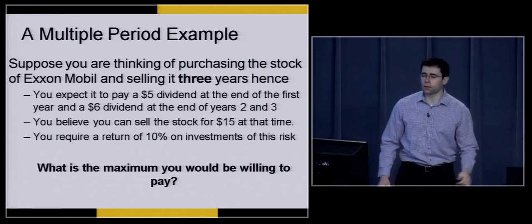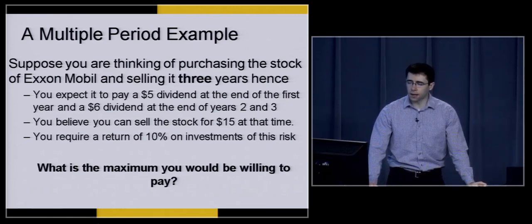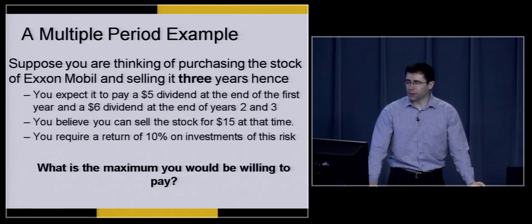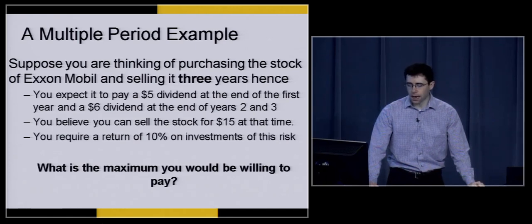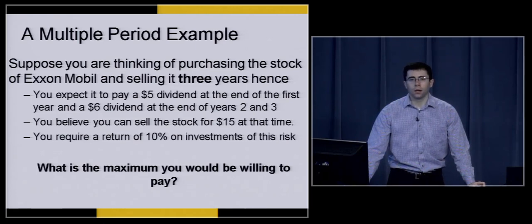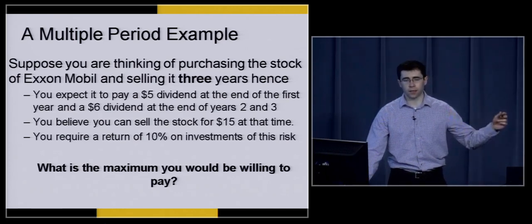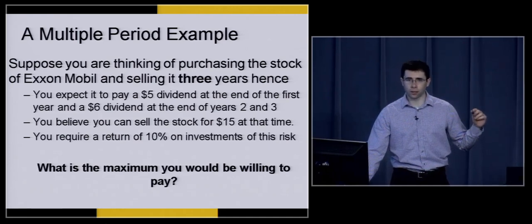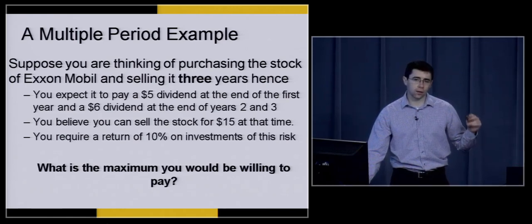Let's try another example. Suppose you're thinking of purchasing the stock of ExxonMobil and selling it three years hence. You expect it to pay a $5 dividend at the end of the first year and a $6 dividend at the end of years two and three. You believe you can sell the stock for $15 at time period three. Again, you require a 10% return on investments of this risk. What's the maximum you should be willing to pay for this stock?